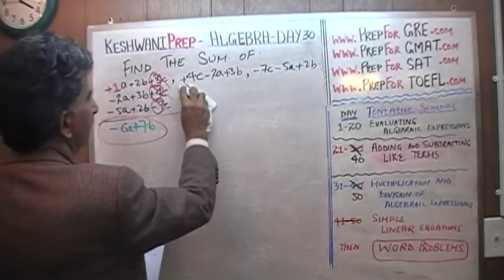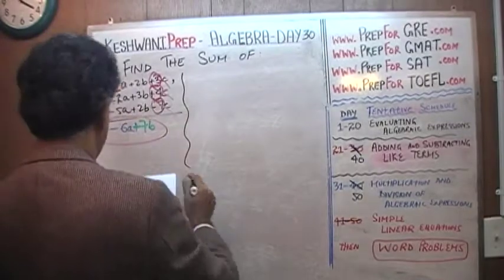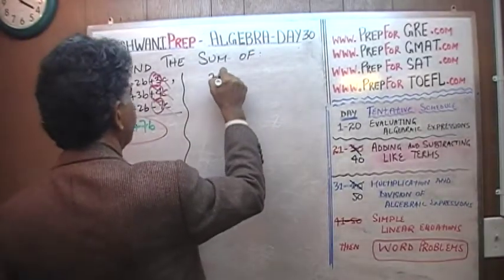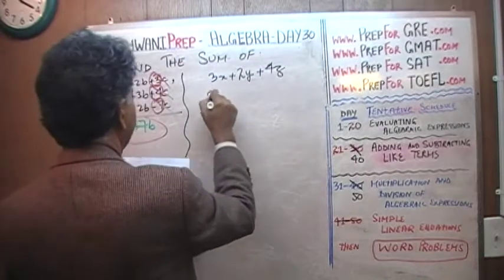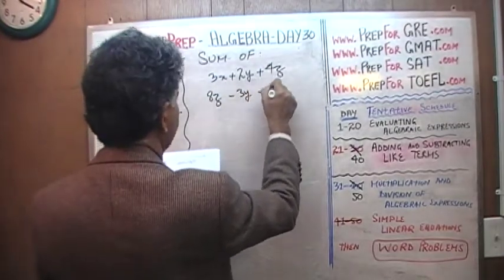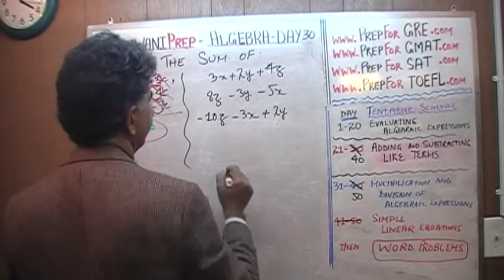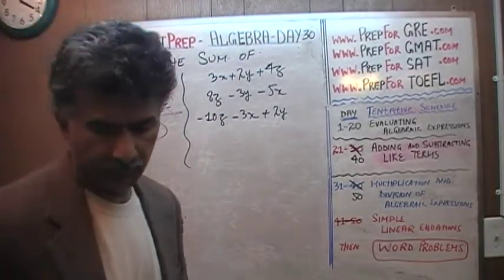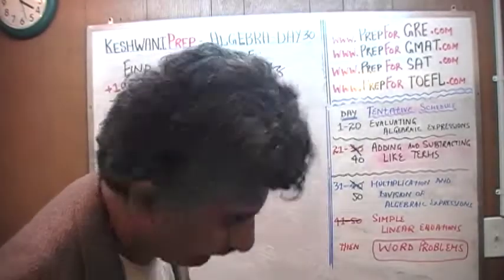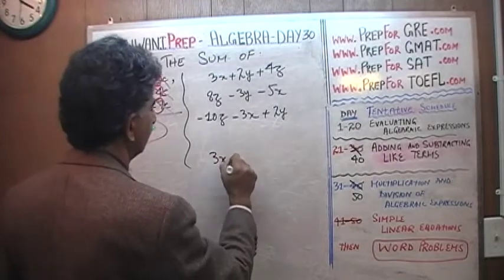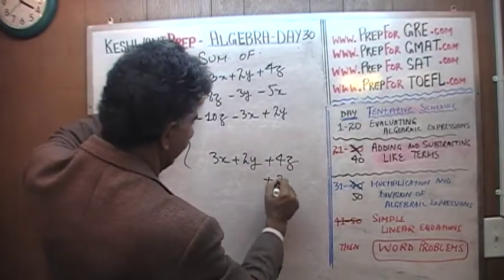Let's do the next problem. We have: 3x plus 2y plus 4z; 8z minus 3y minus 5x; and minus 3x plus 2y minus 10z. Can we add them up as written? No, we cannot — they have to be lined up properly, so we rewrite it. We have 3x plus 2y plus 4z, then 8z goes under the z column.